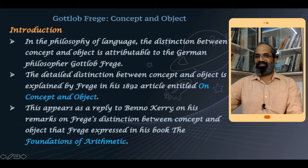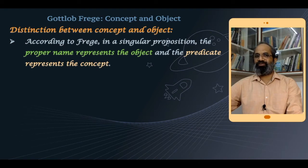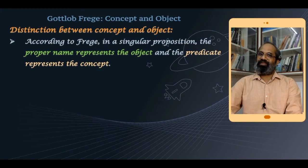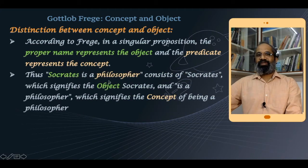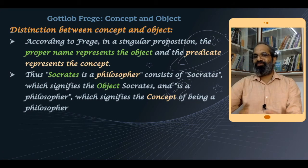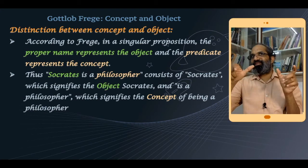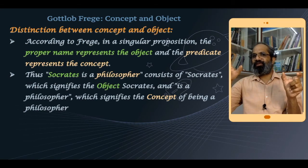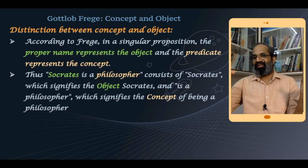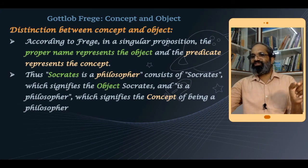According to Frege, in a singular proposition the proper name represents the object and the predicate represents the concept. In the proposition 'Socrates is a philosopher,' 'Socrates' signifies the object and 'is a philosopher' signifies the concept of being a philosopher. In a categorical or singular proposition, the subject term and predicate together explain that the subject belongs to a certain class or has certain attributes.